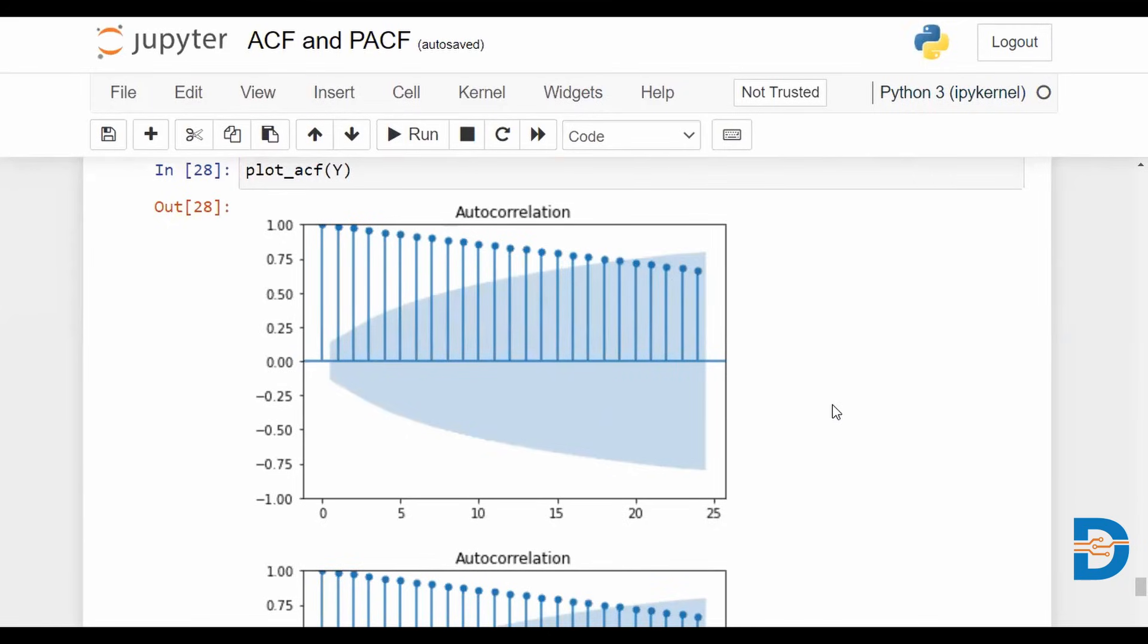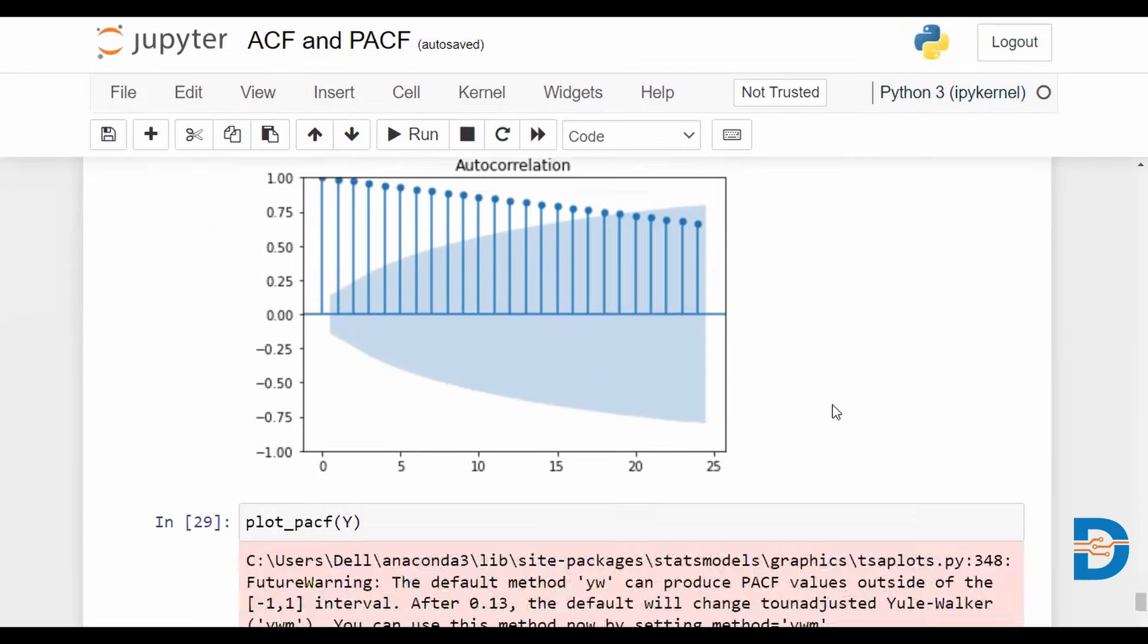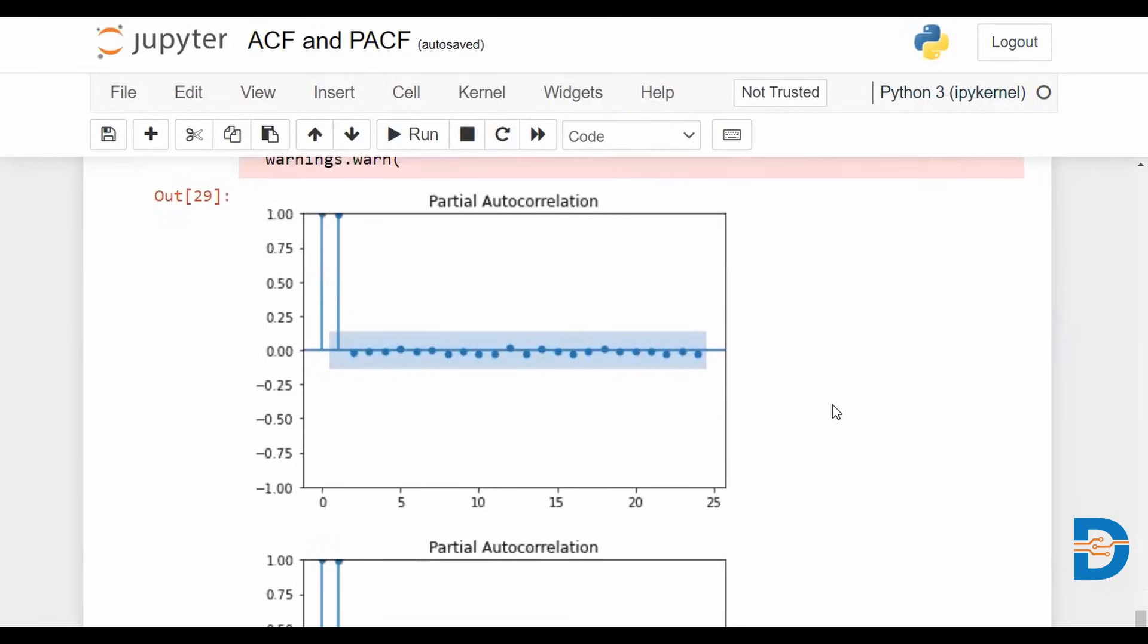So in order to determine the order of this AR model, we will look at the partial autocorrelation for the same series. And what we can notice here is most of the values beginning here are statistically insignificant as they come under the blue air band. And we only have one value really at lag one, ignoring the very first at lag zero.